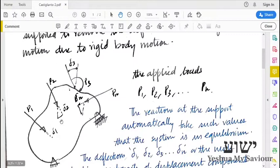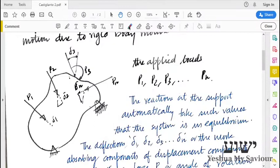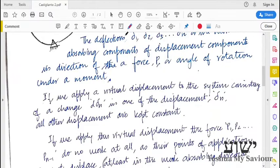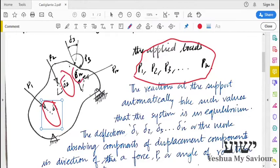Under these loads, the body is in equilibrium, a stable equilibrium. So these are loads, and we can see the displacements.